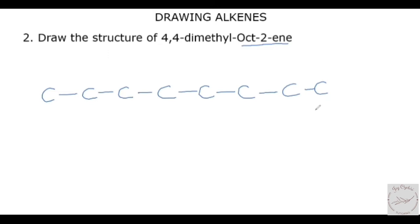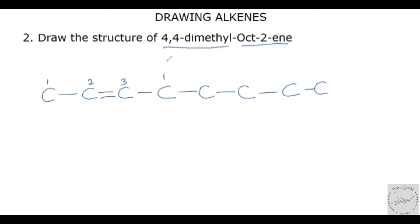Now that we've written out all the carbons, the next thing is to look at which position the double bond is. We're dealing with alkenes, so there has to be at least one double bond somewhere. From this name, it's telling us it's on the second carbon. So if we count from here, we have 1, 2 — we'll put our double bond here. Next we look at the substituents. It says 4, 4 — so if we count 1, 2, 3, 4 — on the fourth carbon, you have two methyl groups. That is why it says 4,4-dimethyl. So we add our two methyl groups: CH₃ and CH₃.